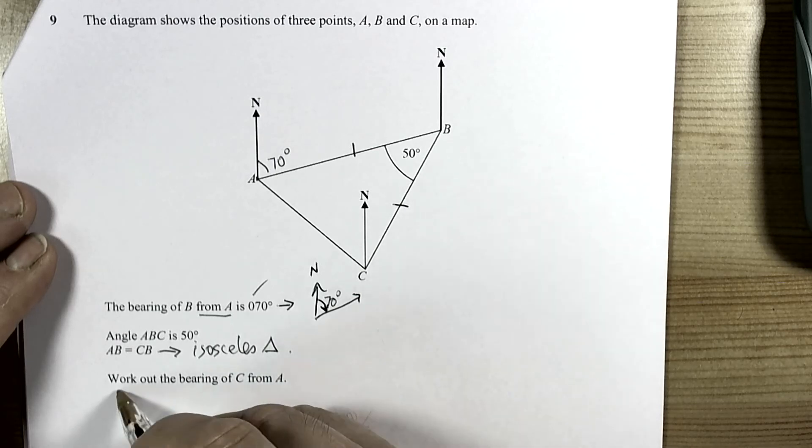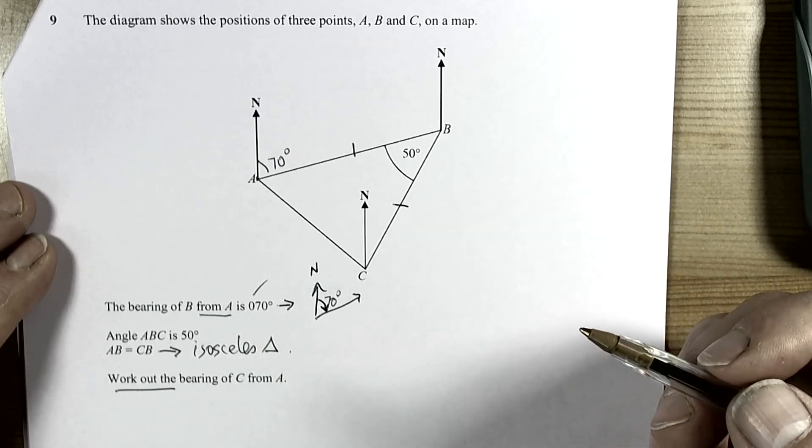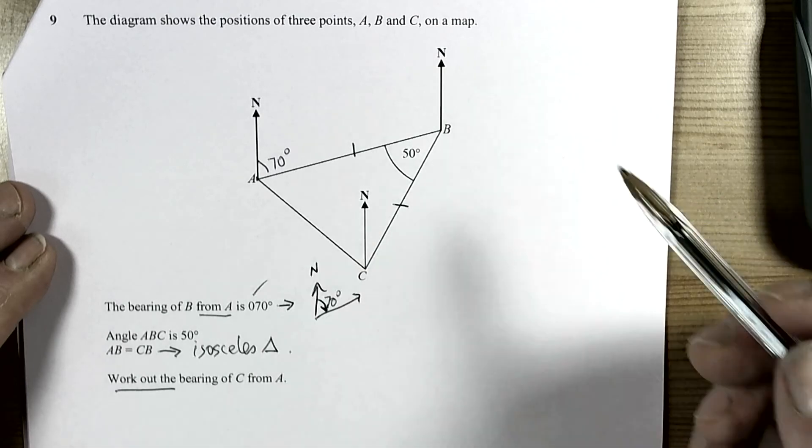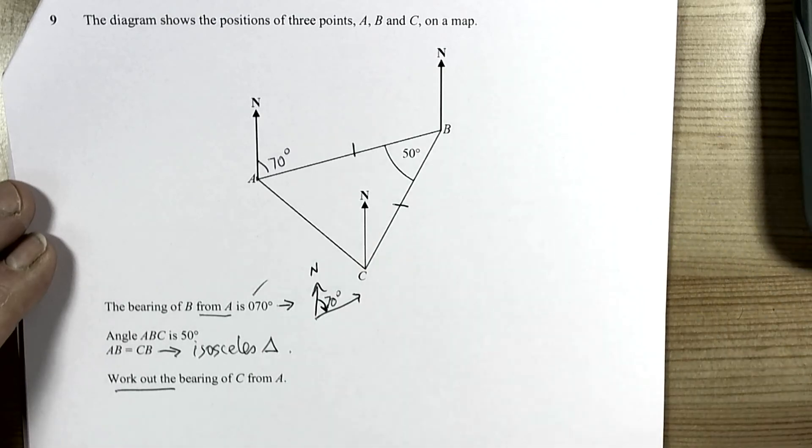It says work out. So it doesn't say you get a protractor. It's not saying this is drawn accurately. So it means we have to use some angle theories. And it wants the bearing of C from A.